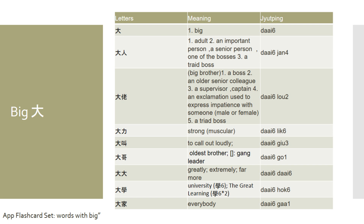Another thing you can append right after daai is the word loo, which informally refers to your boss. So daai loo means your boss or big brother. For example, if you are within the triads and want to refer to your boss, you would say daai loo. Or if you want to refer informally to your bigger, senior real brother, you could say daai loo as well. You can also combine daai with another character to get daai leo, meaning strong or muscular.